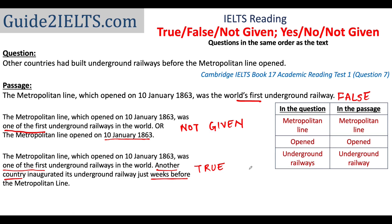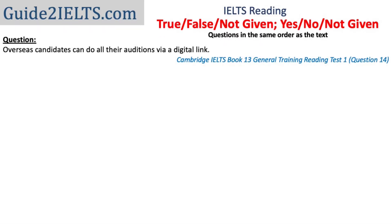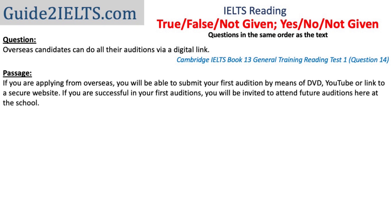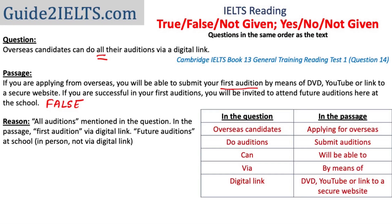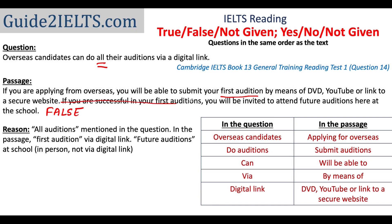Let's look at another example. The question says: 'Overseas candidates can do all their auditions via a digital link.' The passage mentions that a YouTube link or link to a secure website — essentially a digital link — can be used for the first audition. The answer is false because of just one word in the question: 'all.' The auditions after the first will have to be in person. The passage says, 'If you are successful in your first auditions, you will be invited to attend future auditions here at the school.' If that sentence were removed, the answer would be not given.